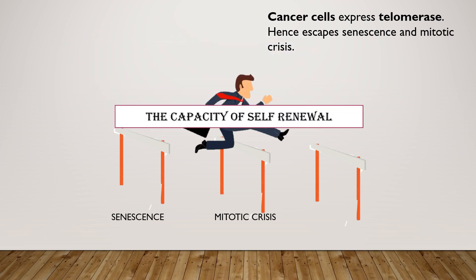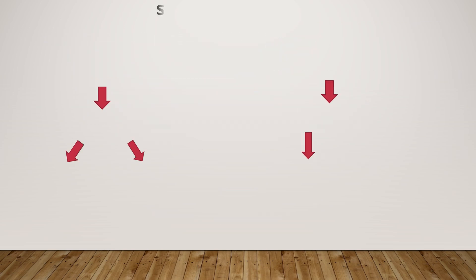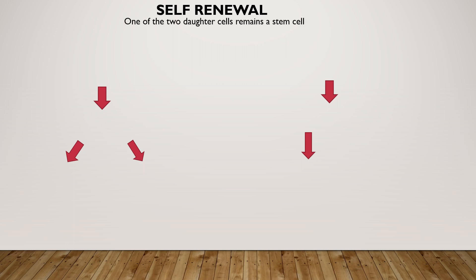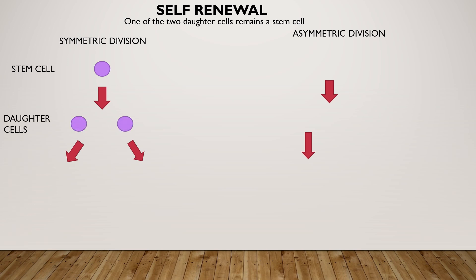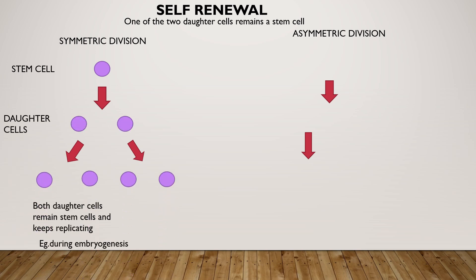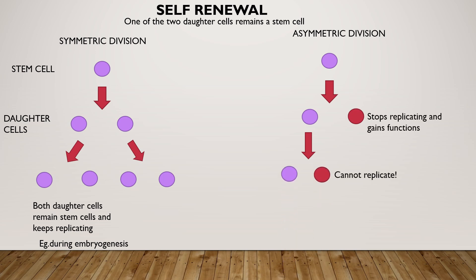Cancer cells also have the property of self-renewal. Cell renewal means that each time a stem cell divides, at least one of the two daughter cells remains a stem cell. This division can take place via two manners: symmetric and asymmetric. In symmetric division, both daughter cells remain stem cells — such divisions may occur during embryogenesis. In asymmetric division, only one daughter cell remains a stem cell and the other loses stemness and gains one or more specialized functions.